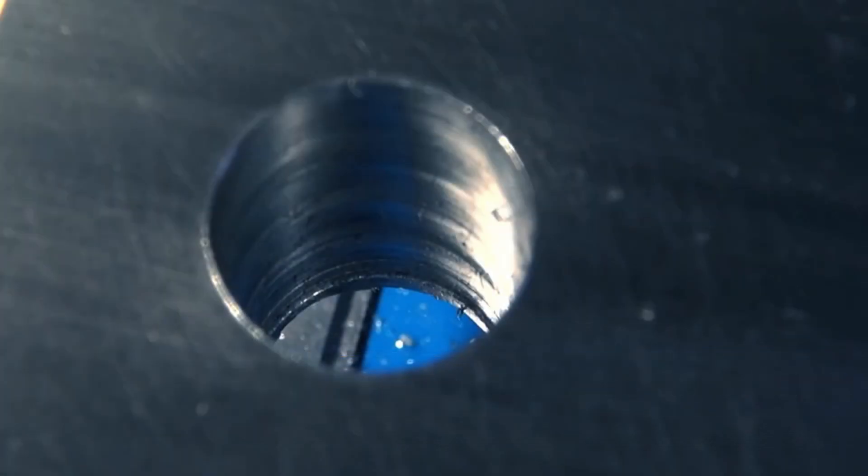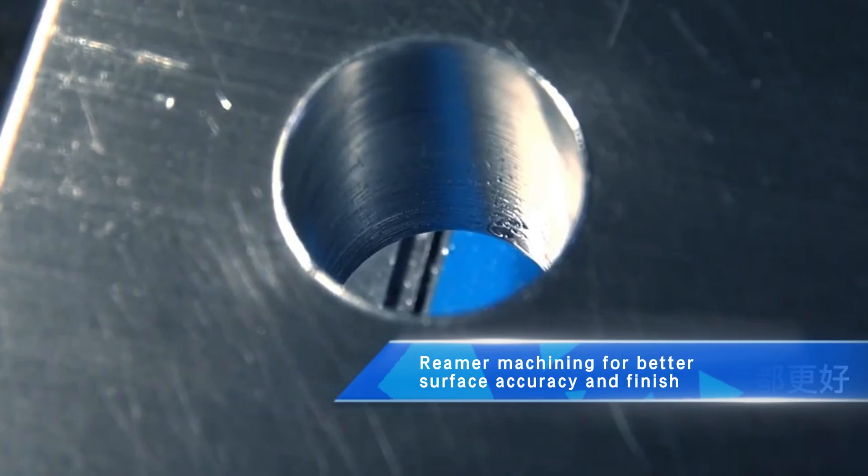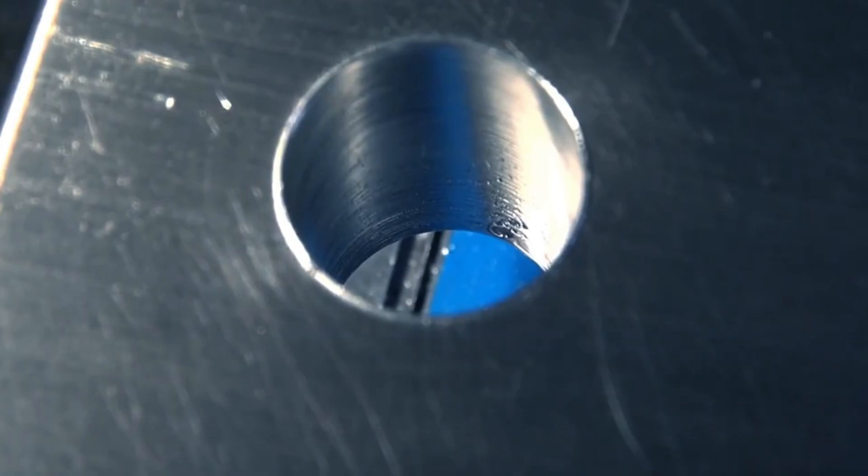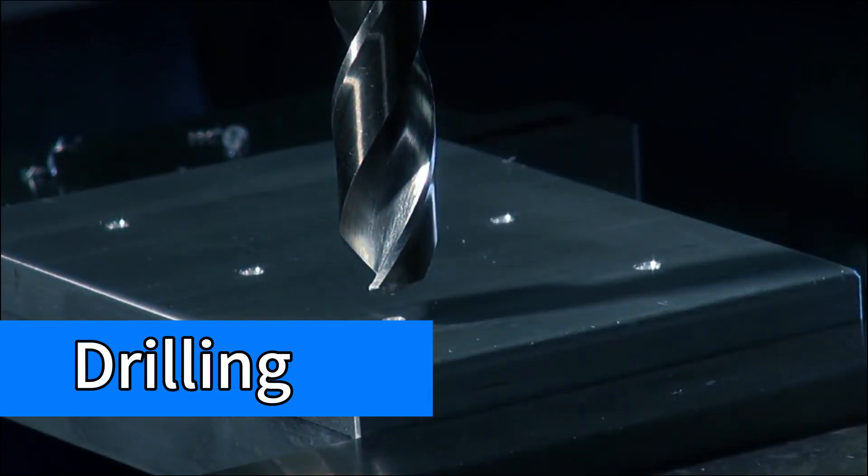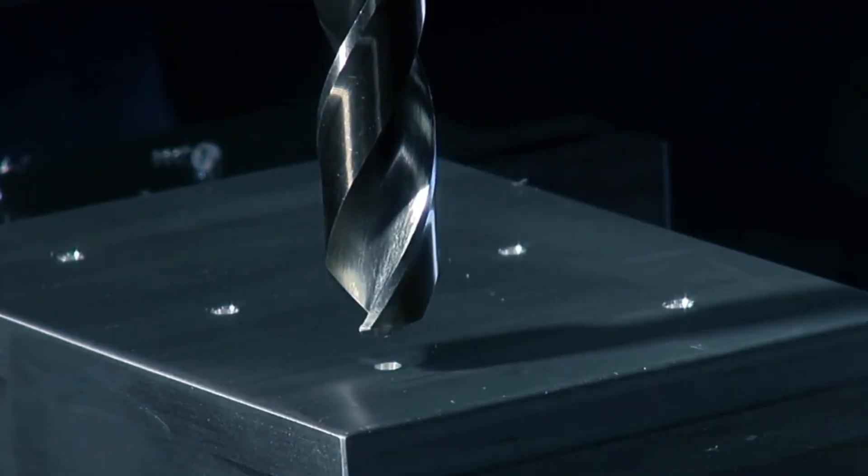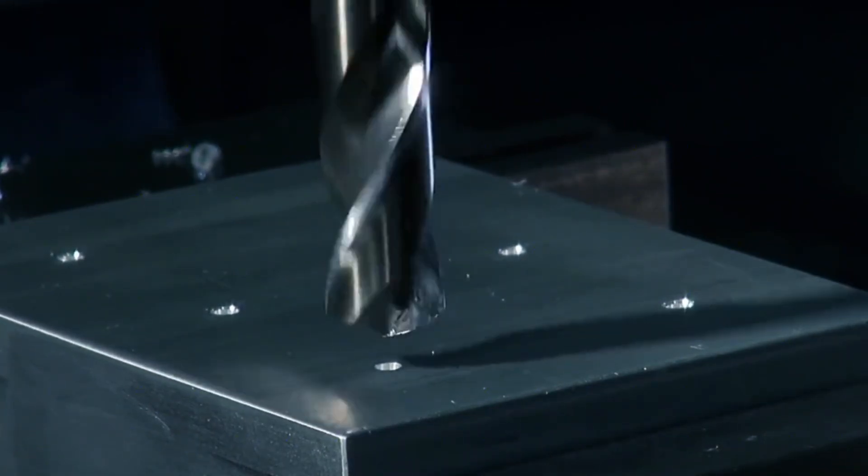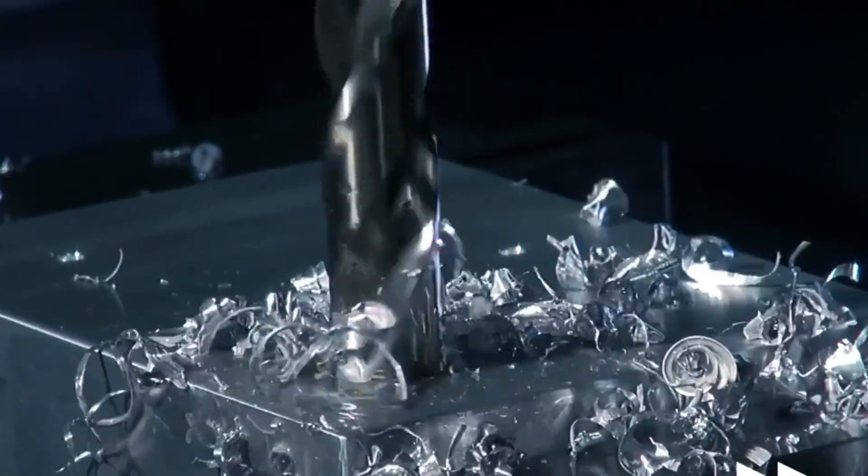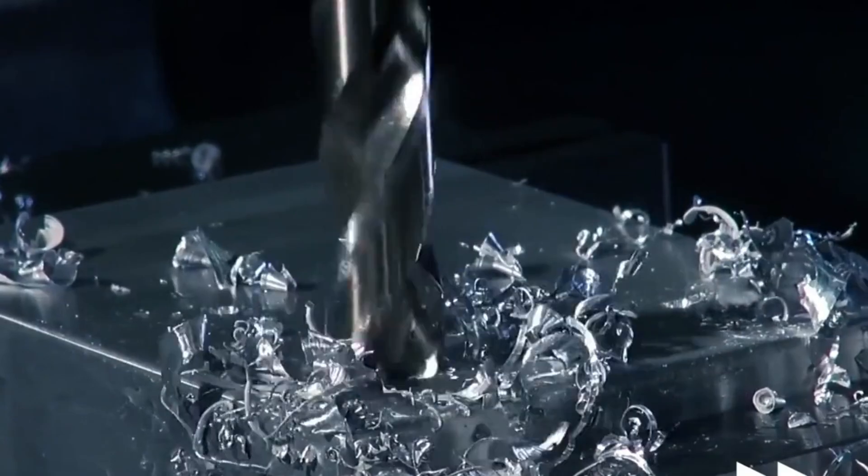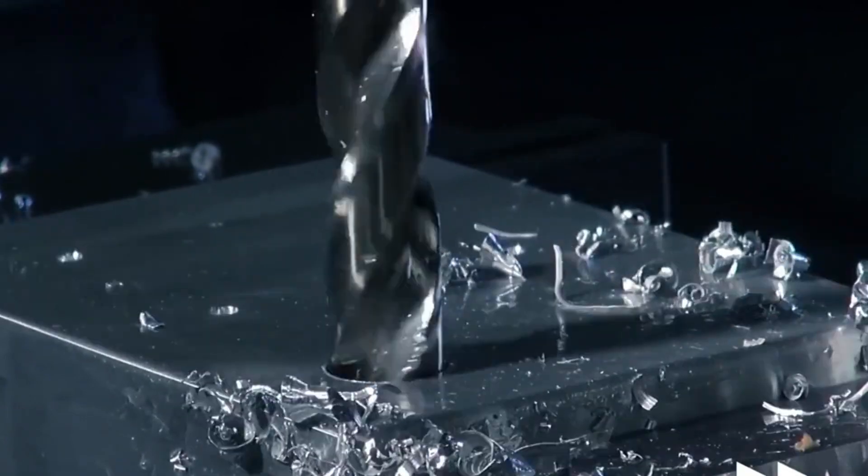Drilling is mainly used for processing holes that do not require high quality. As the name suggests, it is the process of machining holes in solid material with a drill. For holes requiring high machining accuracy and surface quality, the holes should be reamed, countersunk, bored, or honed in subsequent processing to achieve this.